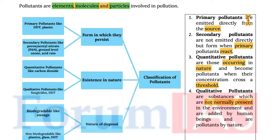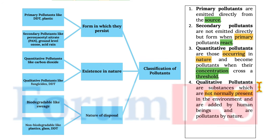These pollutants can be primary pollutants, which are directly emitted from the source, or secondary pollutants, which are not directly emitted but form when primary pollutants react. Quantitative pollutants occur in nature and become pollutants when their concentration crosses a certain threshold. Qualitative pollutants are substances not normally present in the environment, added by human beings, and are pollutants by nature.